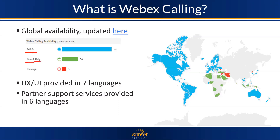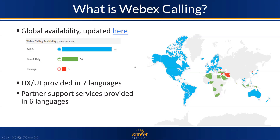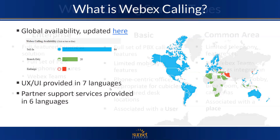This picture only shows about half of the world, but it is expanding to other parts. There's a global availability link in the slides — if I send you this slideshow, you'll have clickable links to see where it's available. So global connectivity is one of the other big benefits of Webex Calling. If you have a multinational enterprise, Webex Calling works because it's already connected to the PSTN and offered in many different locations.